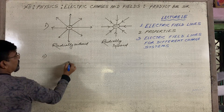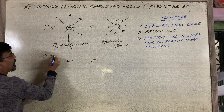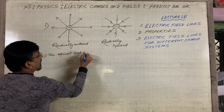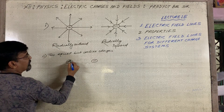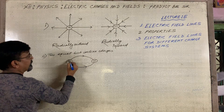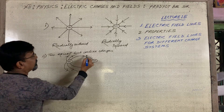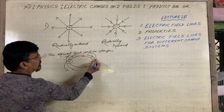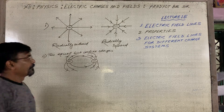Number two: if I take one positive charge and one negative charge — that means two equal but unlike charges — the electric field lines start from the positive end and end at the negative end. This is for two equal but unlike charges.